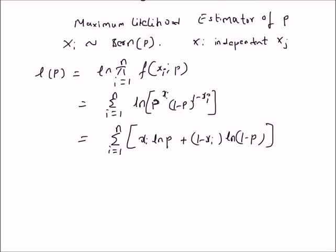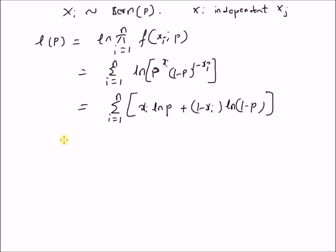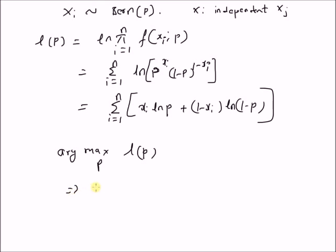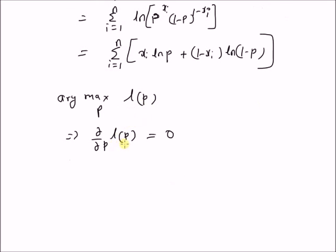To find the maximum likelihood estimator of p, we have to maximize this log likelihood function — find the value of p that maximizes it. This can be accomplished by finding the derivative of the log likelihood function with respect to p and equating it to 0, which basically locates the peak of the log likelihood function.